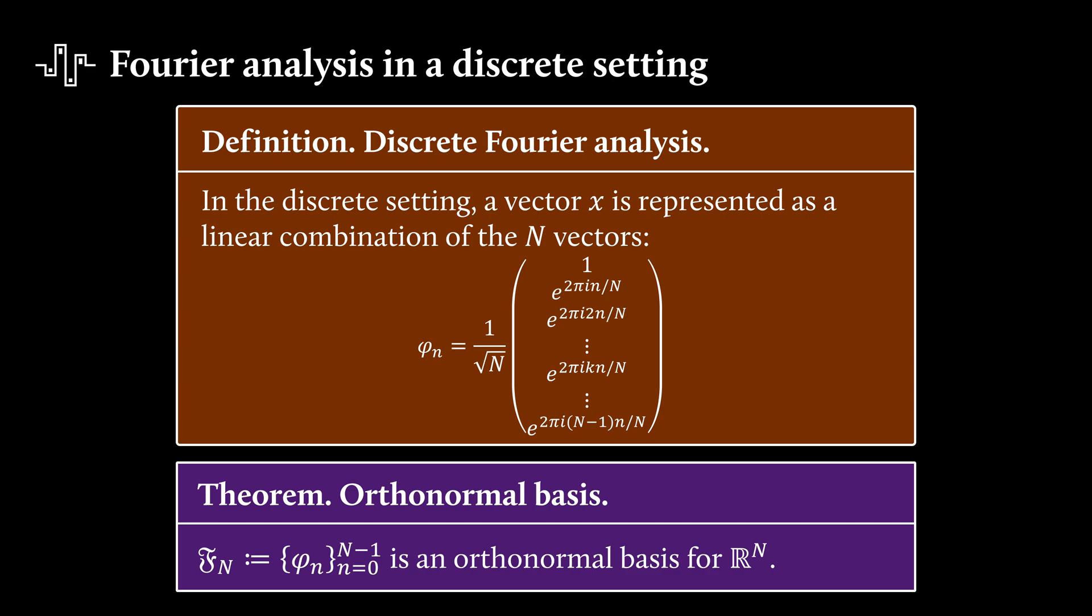And one can show that this set of vectors is indeed an orthonormal basis for Rn. And why do we have the space Rn now? Well, we measured the air pressure, and that corresponds to a voltage. And that voltage is represented by a number like 0.478. So that's why we consider the real numbers. And then why is it Rn? Well, we measure n points, that's why we have Rn.